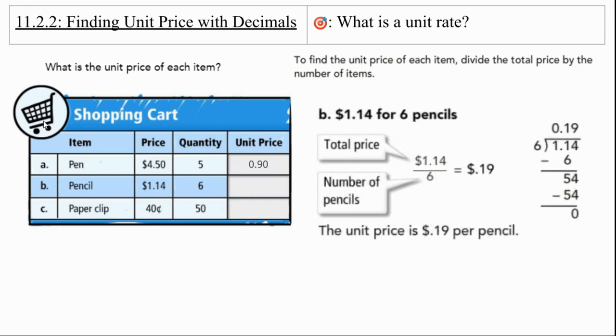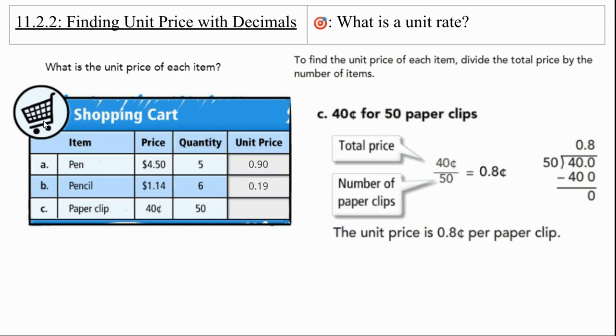Then we look at the pencils, $1.14 for six pencils, price over the quantity, that's going to be 19 cents per pencil. And paperclips. So we have the price divided by the number of paperclips, and it's an eighth of a cent.